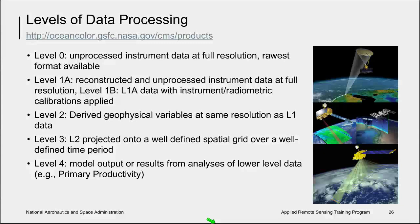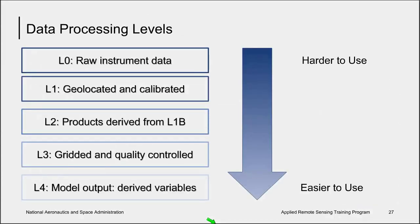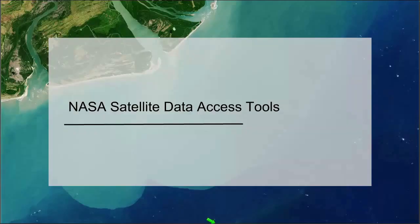Level 2 data consists of derived geophysical variables at the same resolution as the source Level 1 data. These variables, also called data products, include chlorophyll, sea surface temperature, inherent optical properties, and others. Level 3 data are derived geophysical variables aggregated or projected onto a well-defined spatial grid or over a well-defined time period. Level 4 data are model output or results from analyses of lower-level data. Working with lower-level data requires greater effort and more advanced skill; NASA's image processing software CDAS, installed on Linux or Mac OS X, enables processing through these different levels.